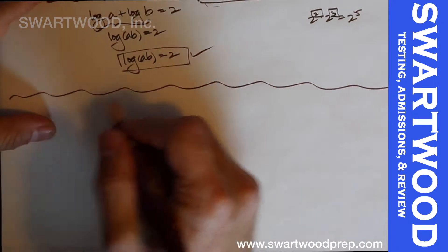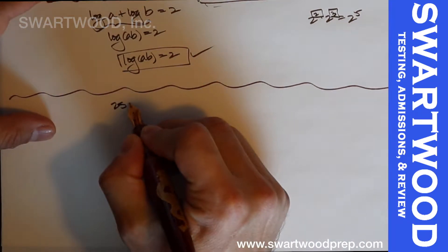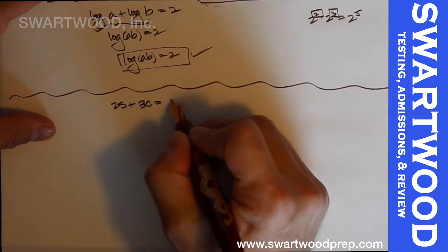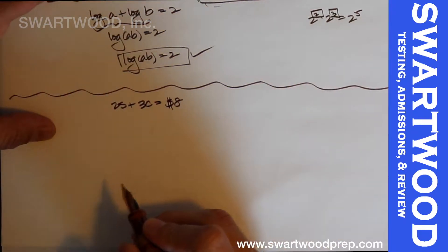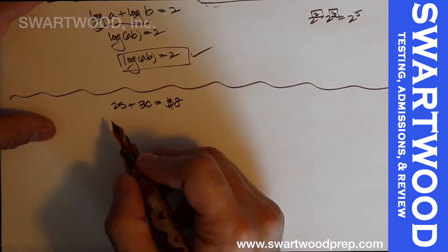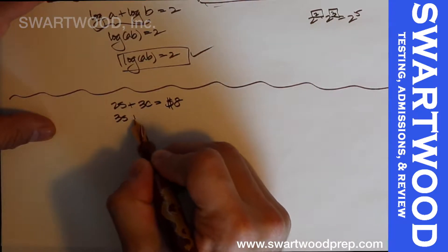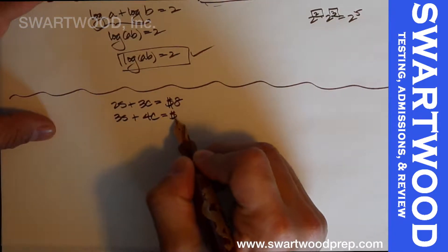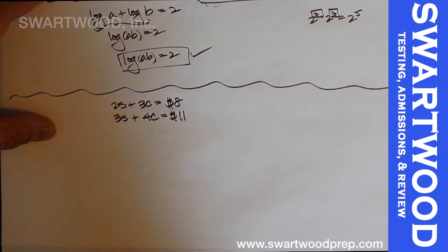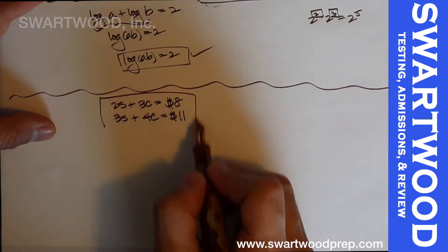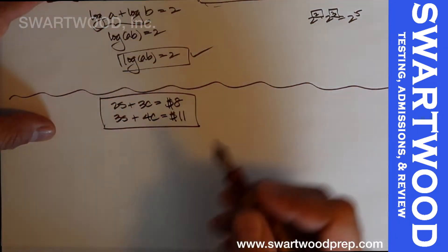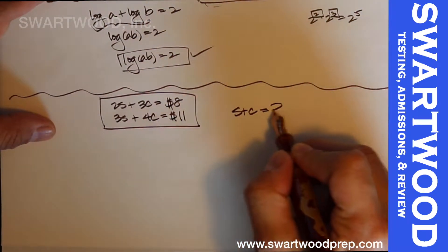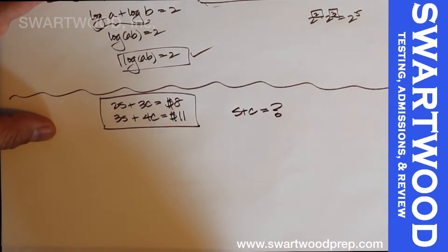It boils down to a system of two equations: 2s plus 3c equals 8, and 3s plus 4c equals 11. The problem is asking you to find s plus c.